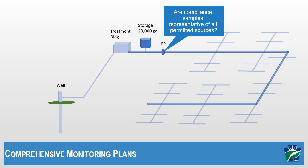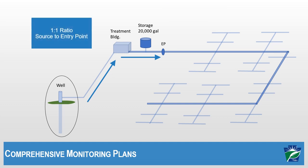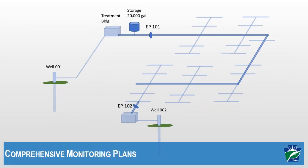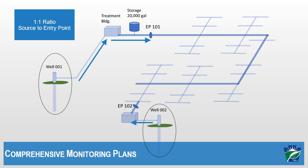If you have one source, let's say a well, that goes to a treatment plant and then to the entry point, conducting representative sampling and completing the plan is rather straightforward. This is what we consider a one-to-one ratio of source to entry point. You may also have multiple sources, each going to their own entry point, which still falls under the one-to-one ratio. For example, source 001 feeds entry point 101 and source 002 feeds entry point 102.